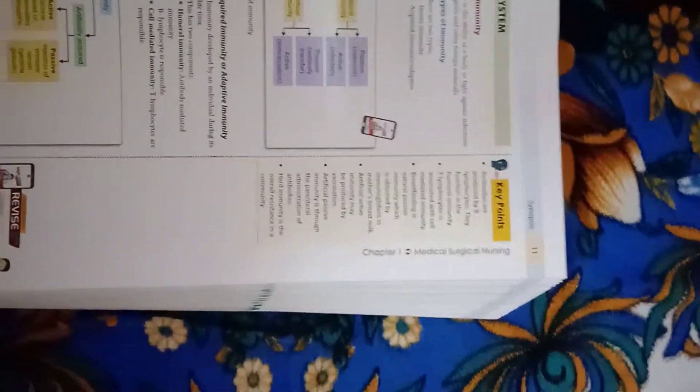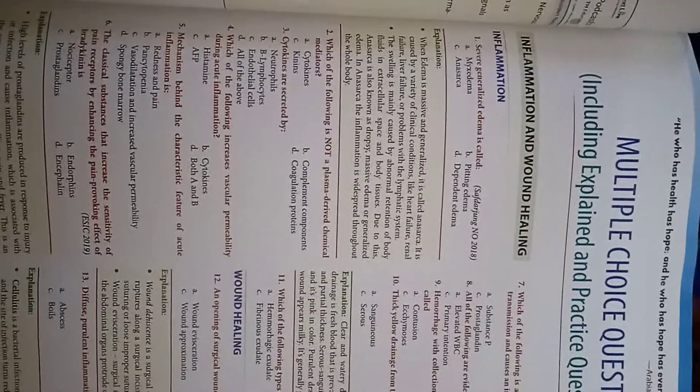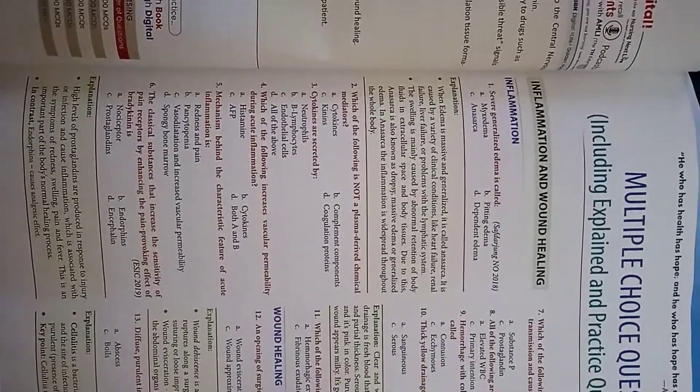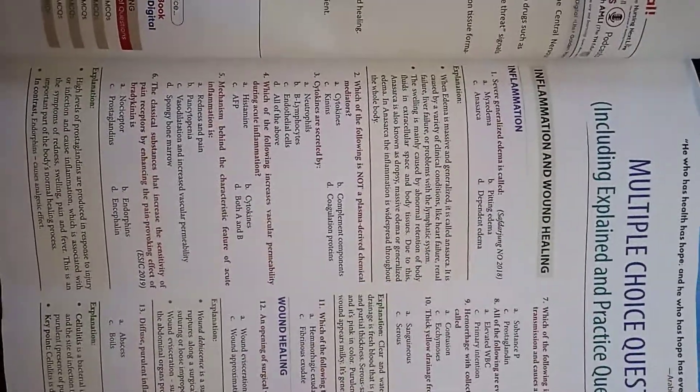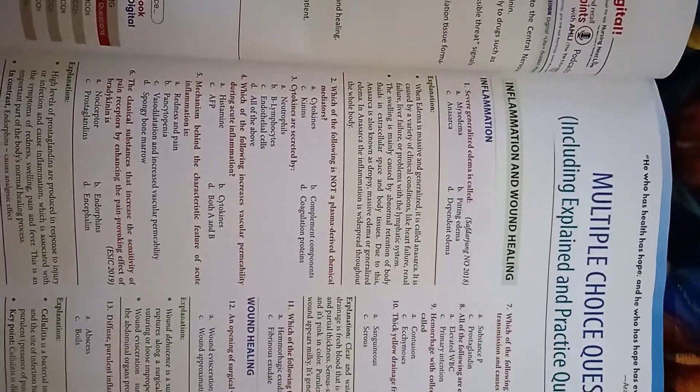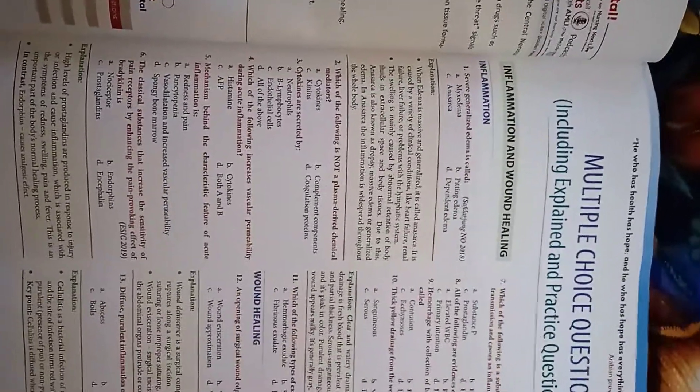Now we can discuss MCQ questions on inflammation and wound healing. Severe generalized edema is called anasarca. When edema is massive and generalized, it is called anasarca. It is caused by a variety of clinical conditions like heart failure, renal failure, liver failure, or problems with the lymphatic system. Swelling is mainly caused by abnormal retention of body fluids in extracellular space and body tissue. Anasarca is also known as dropsy, massive edema, or generalized edema. In anasarca, the inflammation is widespread throughout the body.